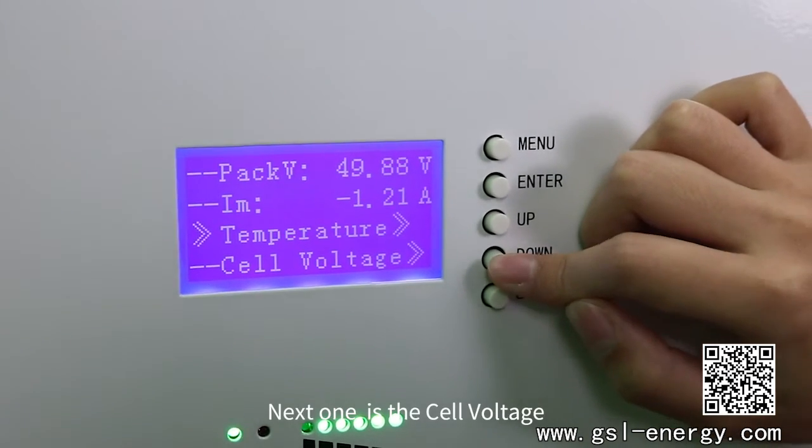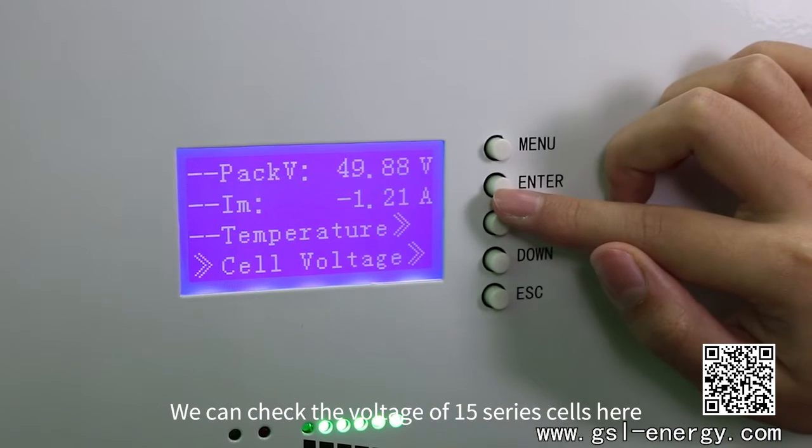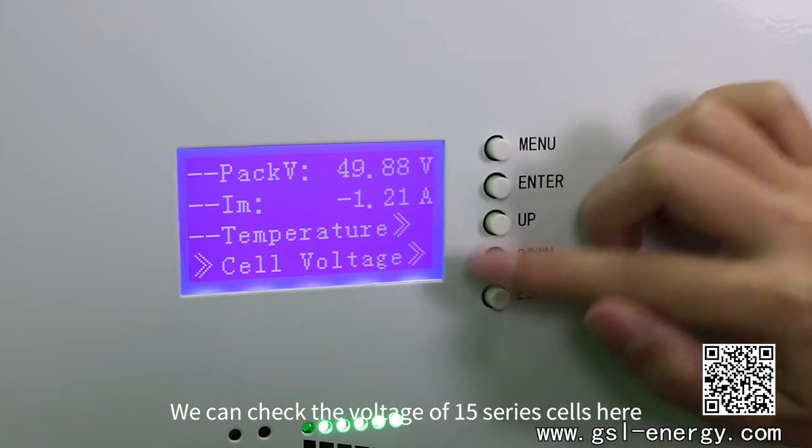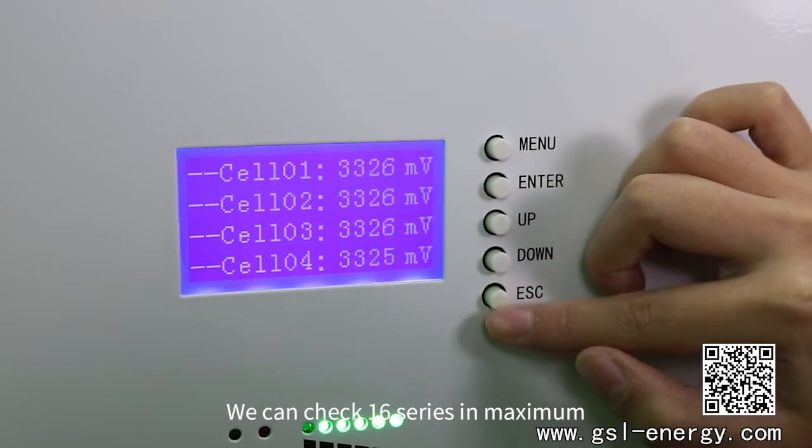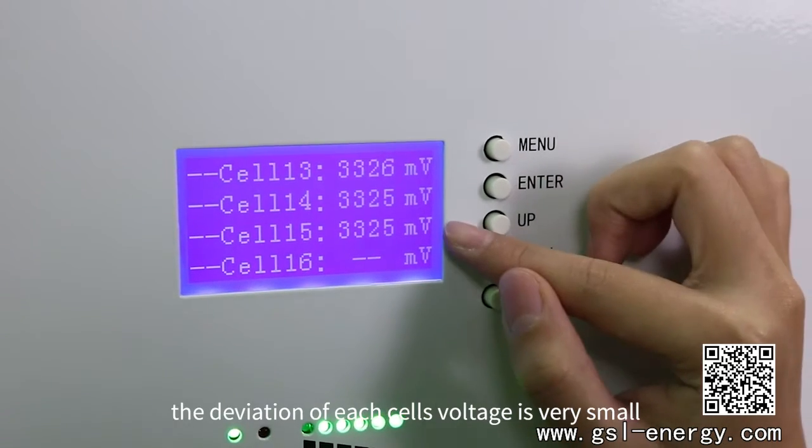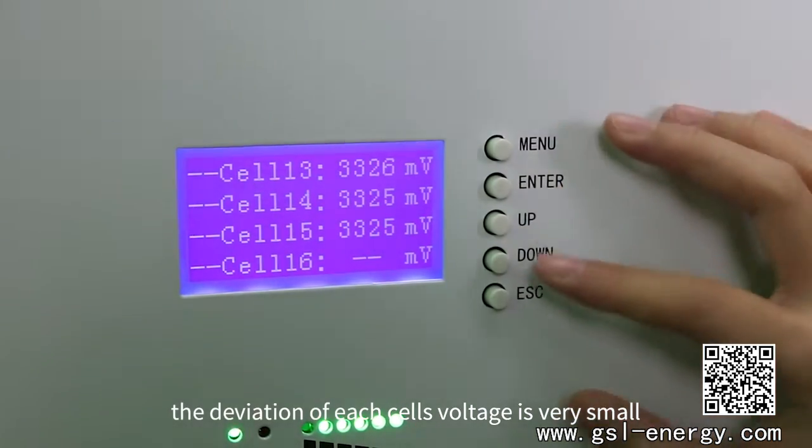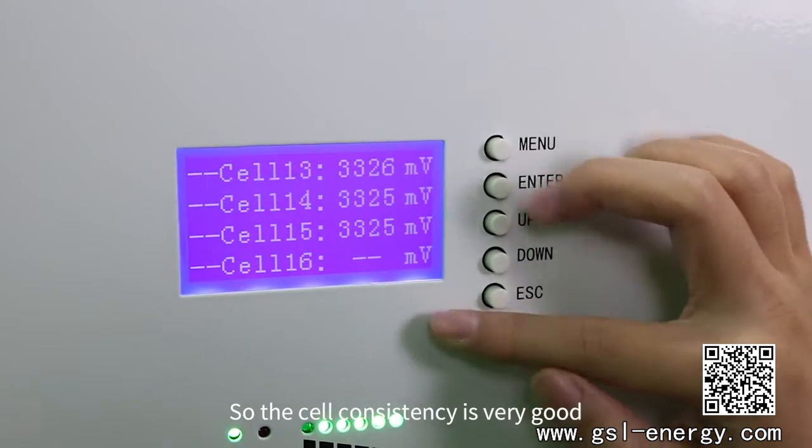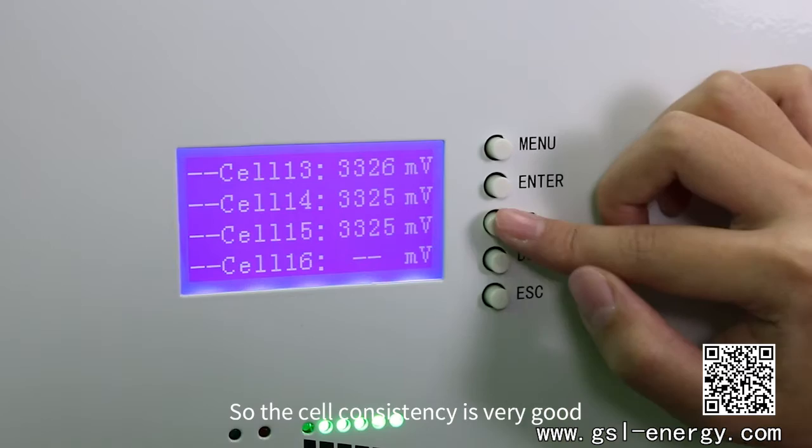Next one is the cell voltage. We can check the voltage of 15 series cells here. We can check 16 series in maximum. Also, we can see the deviation of each cell's voltage is very small, so the cell consistency is very good.